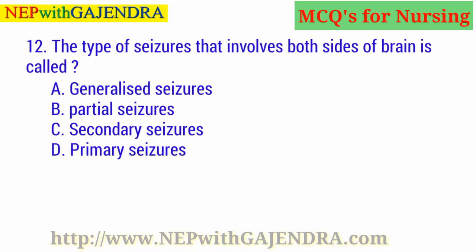The type of seizures that involves both sides of the brain is called: A. Generalized seizures. B. Partial seizures. C. Secondary seizures. D. Primary seizures. The right answer is A: Generalized seizures.